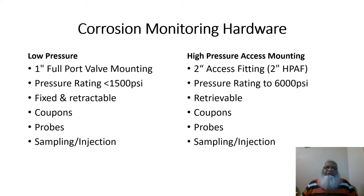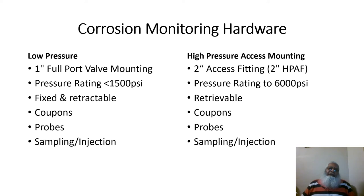High-pressure access fittings are normally called two-inch access fittings, generally known as 2-inch HPAF, rated to 6000 psi, with some special cases rated up to 10,000 psi. These are generally retrievable — meaning the mounted devices can be retrieved while the system is under pressure, without shutdown. Devices inserted through these HPAF access fittings include coupons, probes, sampling points, and injection points.